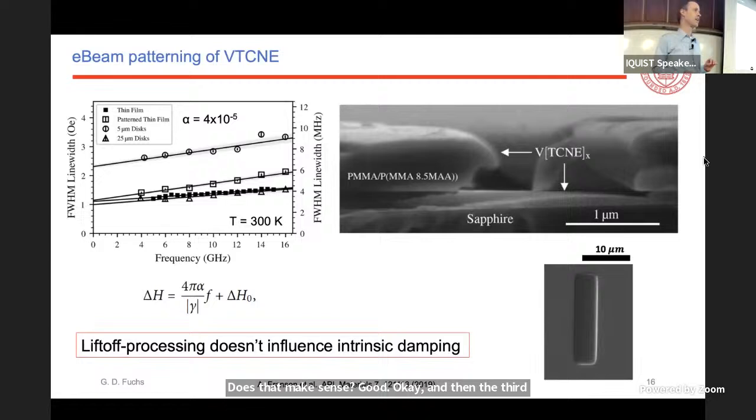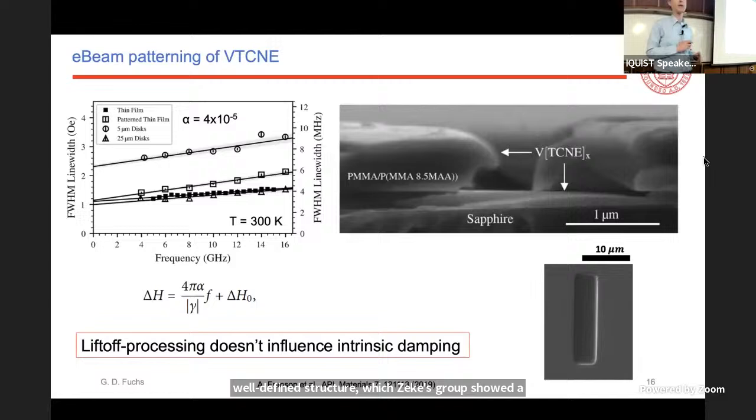And then the third ingredient, which I think is very important for what we're doing here is that you can actually pattern this material in a very simple way. You just do regular EV lithography. So you make some template with PMMA with an undercut and you stick this thing in the reactor and it grows. And then using the magic of chemistry, you can dissolve the PMMA and not the VTCNE allowing for a liftoff process. And that leaves behind some very clean, well-patterned, well-defined structure, which Zeke's group showed a couple of years ago, doesn't affect the Gilbert damping coefficient, the viscous damping of the material. So you're able to produce really high quality magnetic samples that you can actually just lay out in CAD. And to me, that's very powerful and very interesting.